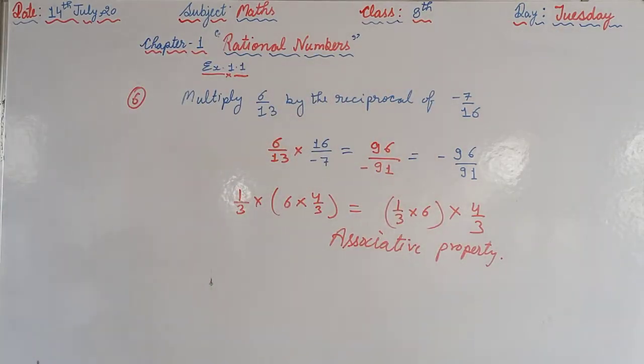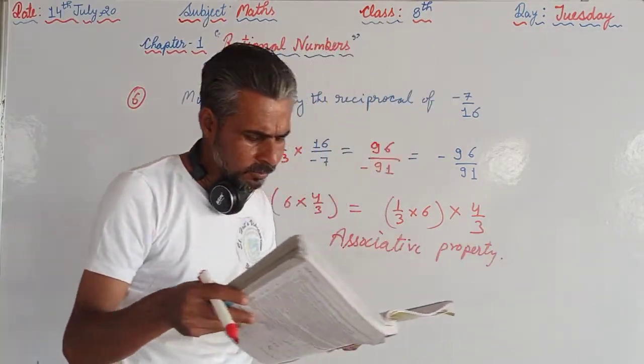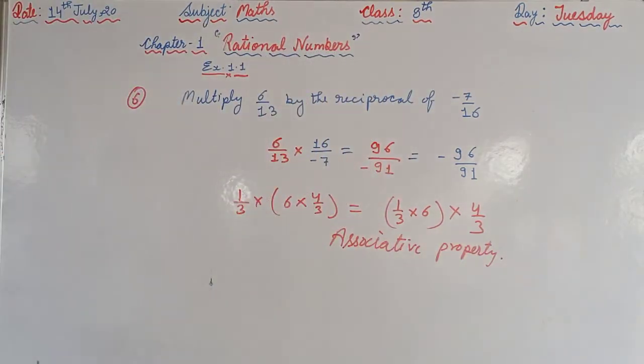Now in the next question: is 8 upon 9 a multiplicative inverse of minus 1 and 1 by 8? So it cannot be a multiplicative inverse, because the signs in the multiplicative inverse cannot be changed. So that is why it is rejected. Because if we multiply these we will not get 1. There is a negative sign there, so that is not the multiplicative inverse.